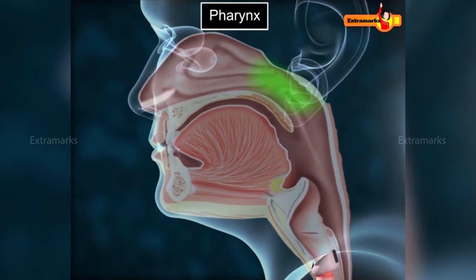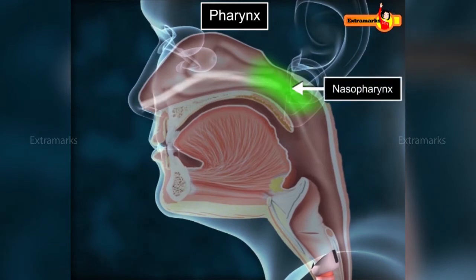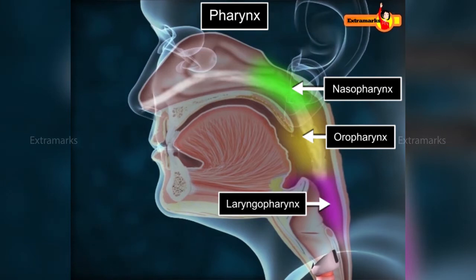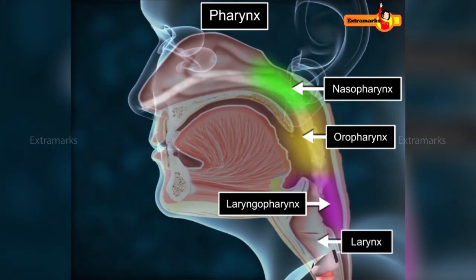Filtered, moist, and warm air passes from the nasal cavity into the nasal pharynx, the upper part of the pharynx. Other parts of the pharynx include the oropharynx, located behind the buccal cavity, and the laryngopharynx, located behind the larynx. After the nasal pharynx, air passes through the oropharynx and laryngopharynx and enters the larynx.